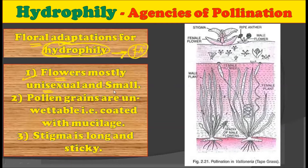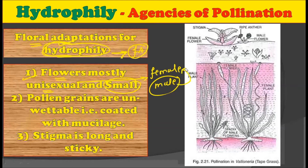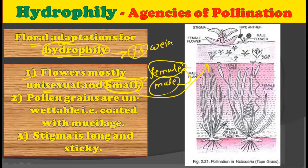The first floral adaptation: flowers are mostly unisexual and small. This makes sense because most of the flowers are born with only one sex — either female flowers or male flowers. Then from male flowers, pollen grains travel to the female flowers to pollinate. And generally these are very small in size because these plants have to be weightless to float on the surface of water, and that is why the size of these flowers is mostly small.